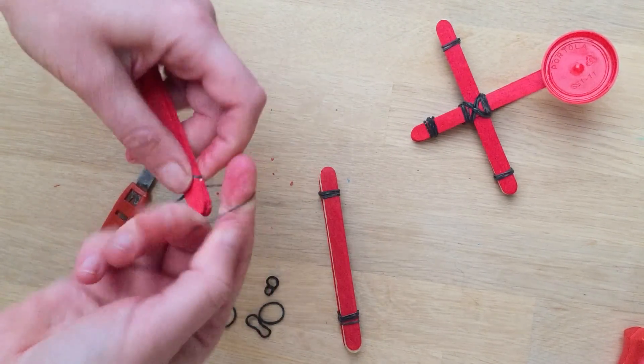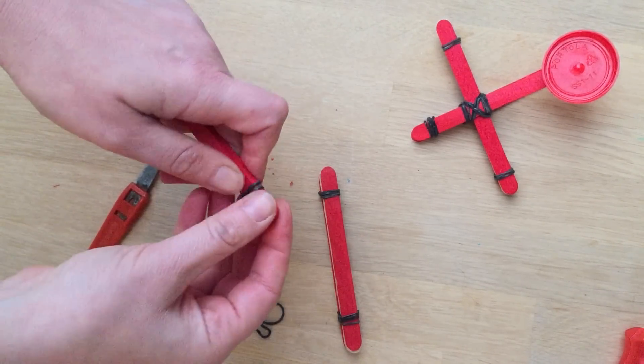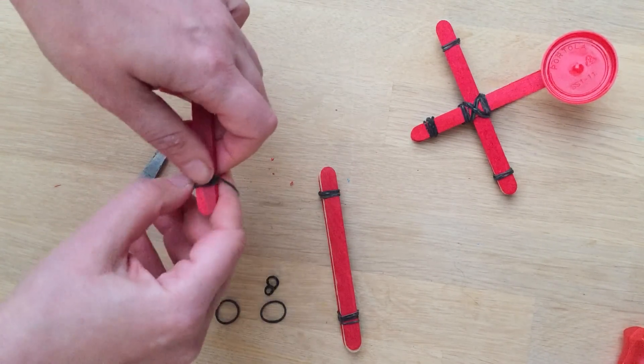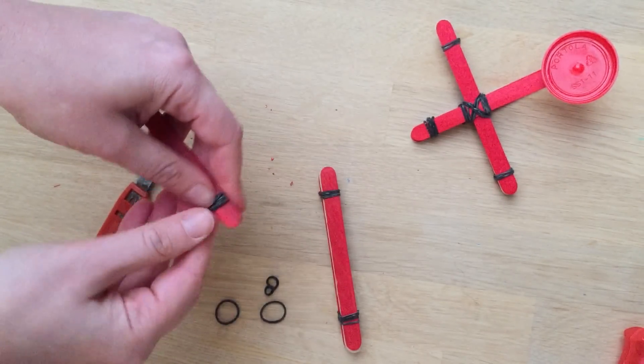Then you take another loom band and wrap it around. Now this time you do need it really tight because this is going to be the springboard. I'm going to put two lots around. I do want this to be secure.